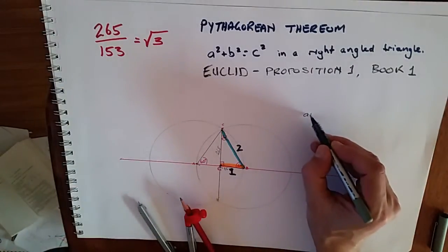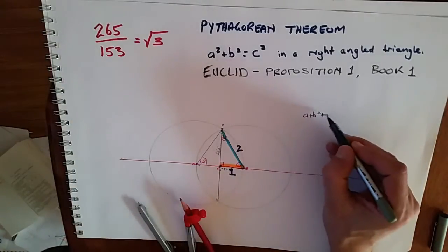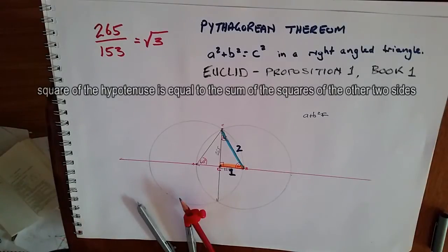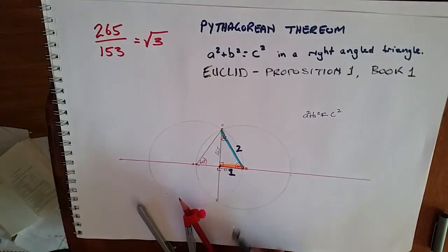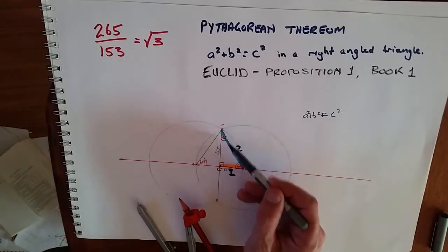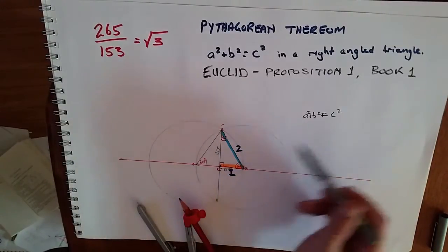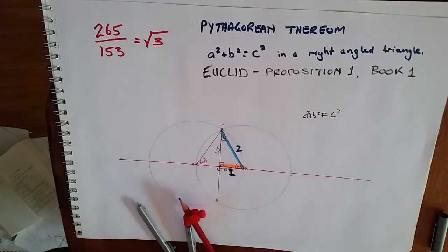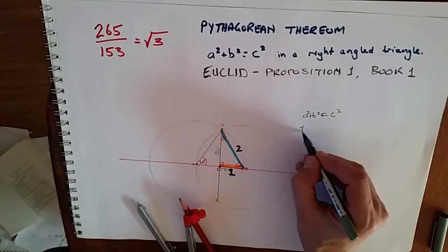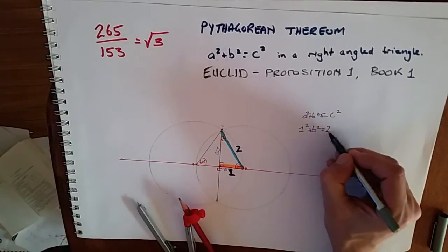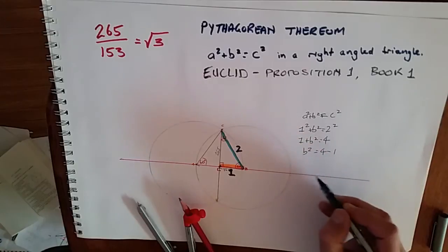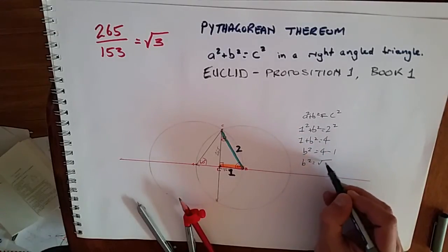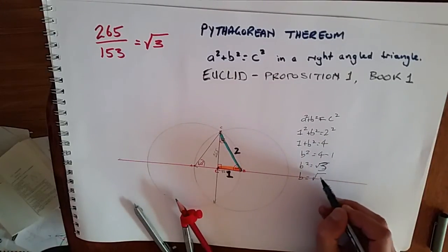Now we can go back to Pythagorean theorem: a squared plus b squared is c squared. The square of the hypotenuse is equal to the sum of the squares of the two remaining sides. C is the hypotenuse, the long side, so two squared would be equal to these two added together. We know what A is: 1 squared plus b squared equals 2 squared. So 1 plus b squared equals 4, so b squared equals 4 minus 1, so b squared equals 3, therefore b equals square root of 3.